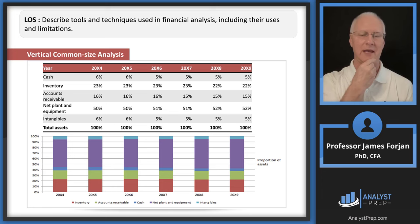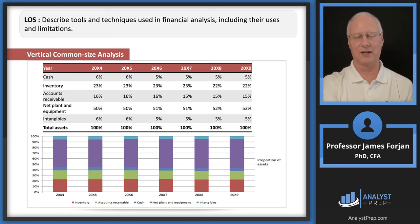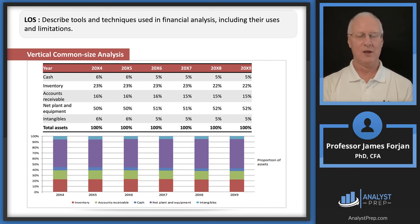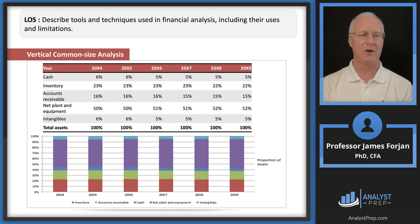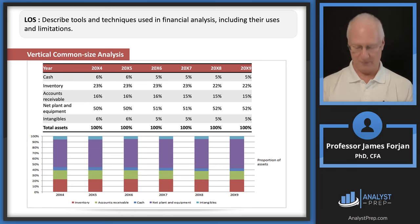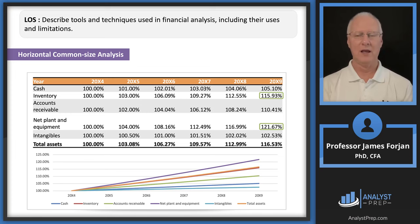Here's a vertical common size analysis — you just go down the column — and below it you can do a graph. Looking at the graph, you can see the purple and green lines tracking across periods. The advantage of vertical analysis is it allows you to view what's happening to each asset account over time. For example, net plant and equipment at 50%, 50%, 51%, 51%, 52%, and 52% tells us about incremental investments in property, plant, and equipment net of accumulated depreciation.